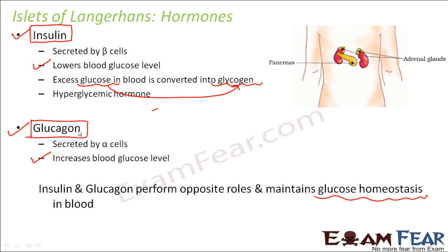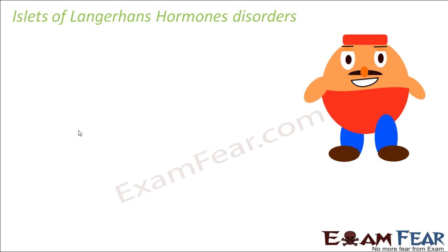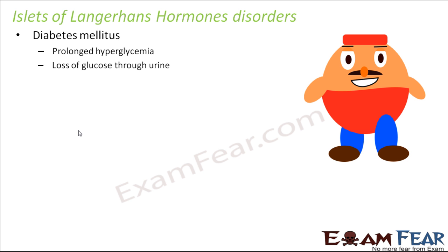Now you know why insulin is given to a patient suffering from diabetes. If there is a disorder of these hormones from the islet of Langerhans, one condition is diabetes mellitus — prolonged hyperglycemia. Hyper means more, so hyperglycemia means too much glucose in the blood. In that case, glucose passes out even through the urine. A urine test showing glucose indicates that the blood glucose level has increased so much that it has started coming out in the urine. Diabetes mellitus can be brought under control by application of insulin.